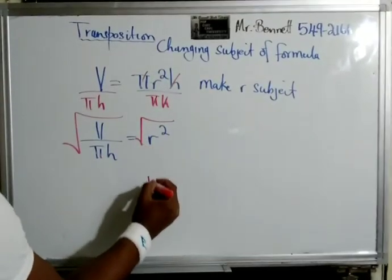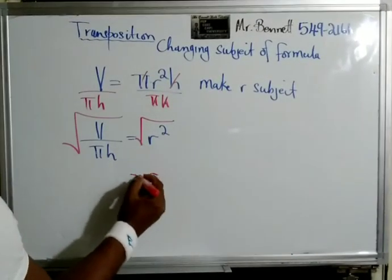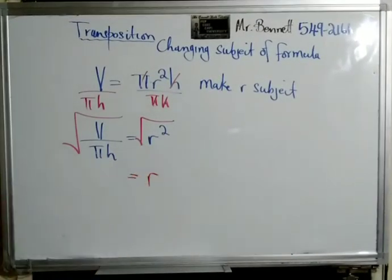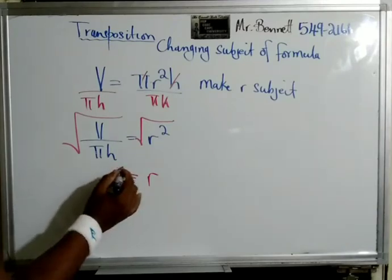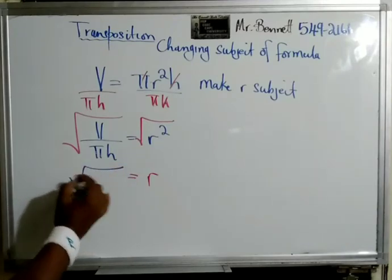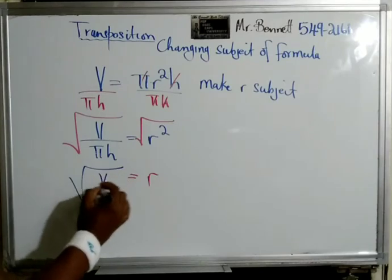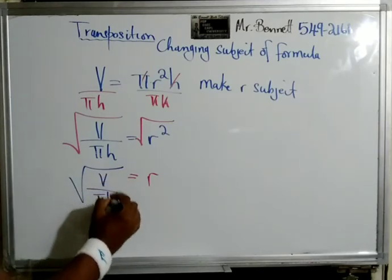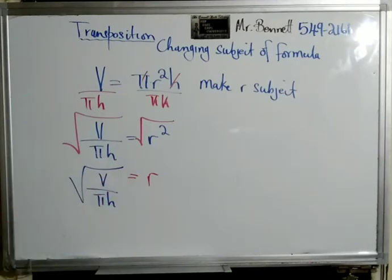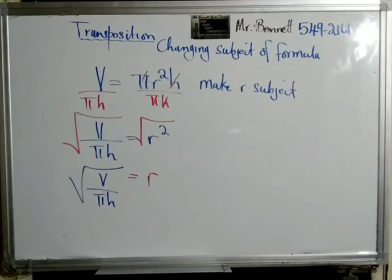As we discussed earlier, the opposite of square is square root, so this will leave us with r. Therefore r is equal to the square root of V over pi h.